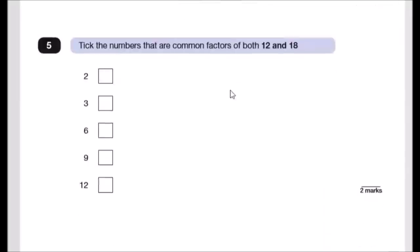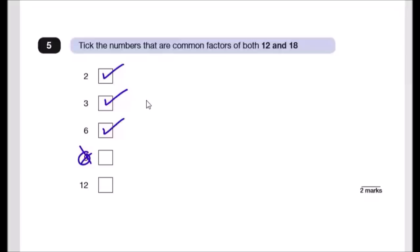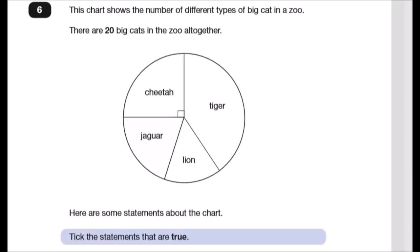Question 5: take the numbers that are common factors of both 12 and 18. Both are even, so 2 is a common factor. They're both in the 3 times table, and both appear in the 6 times table. Only 18 appears in the 9s, and only 12 appears in the 12s — so those don't count. The answers are the first three boxes: 2, 3, and 6.